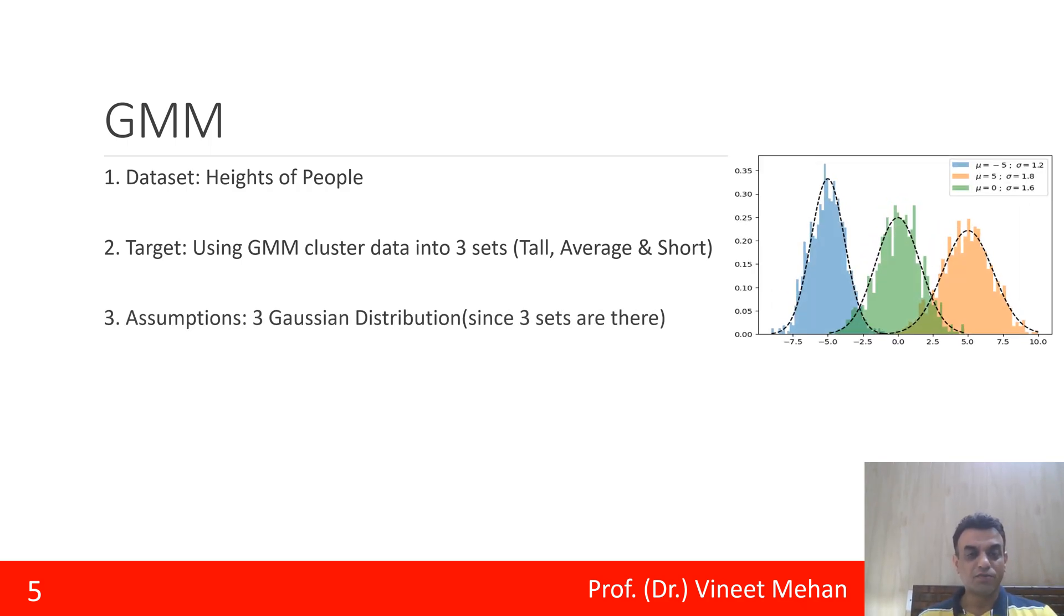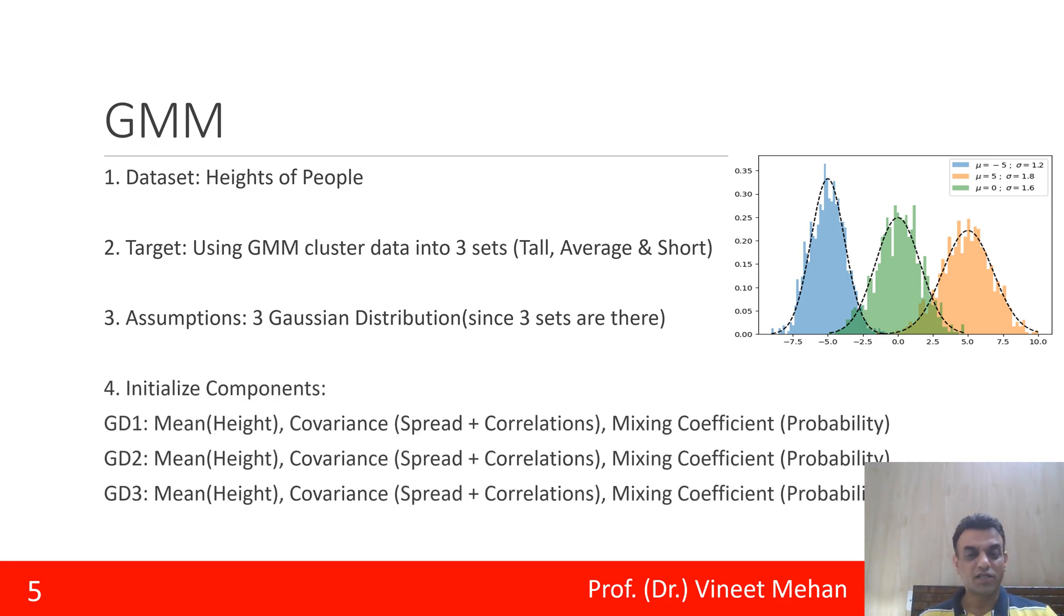Then is the assumption: since we are to make three clusters, so we assume that there are three Gaussian distributions. So we have plotted the same as blue, green, and red distribution. Then we need to initialize the components. First, we need to find out the mean - mean of first Gaussian distribution, of second, and of third. Mean means the height: the height of first curve, height of second curve, height of third curve.